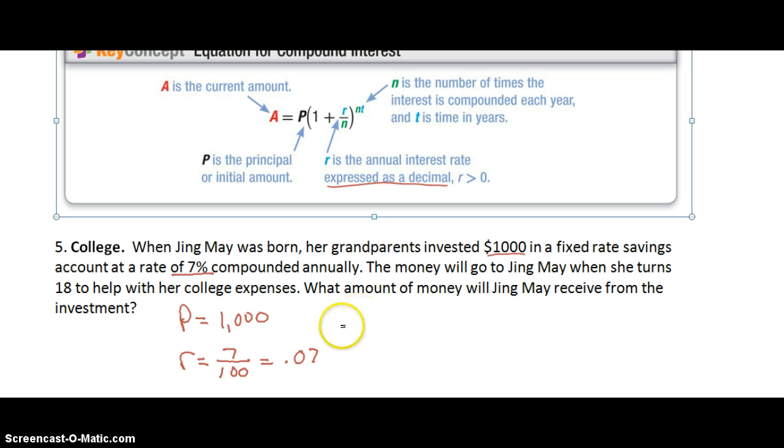So what is our N? We're looking for N. N is the number of times the investment is compounded each year. So they tell us that it is compounded annually. Compounded annually means it's going to be compounded one time a year. So our N for this equation is just going to be 1 because it's only compounded once a year. The last variable we're looking for is T. T is how long. So when Jing was born is when we invested and when she turns 18 is when we get the money back. So T is going to be 18 years.